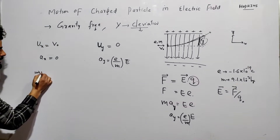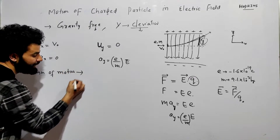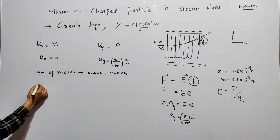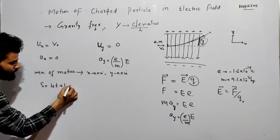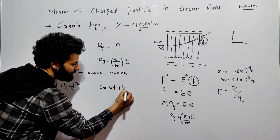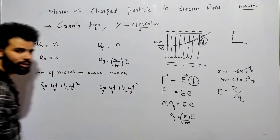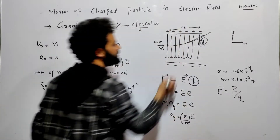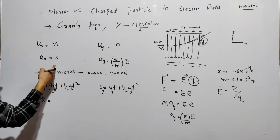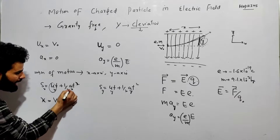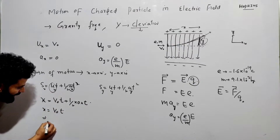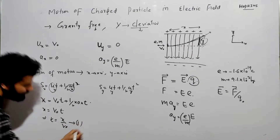Now we apply equations of motion separately along the x-axis and y-axis. Along the x-axis: s = ut + ½at². Let the length of the plate be x. The displacement along x is: x = v₀·t + ½·(0)·t², which gives x = v₀·t, so t = x/v₀. This is equation 1.